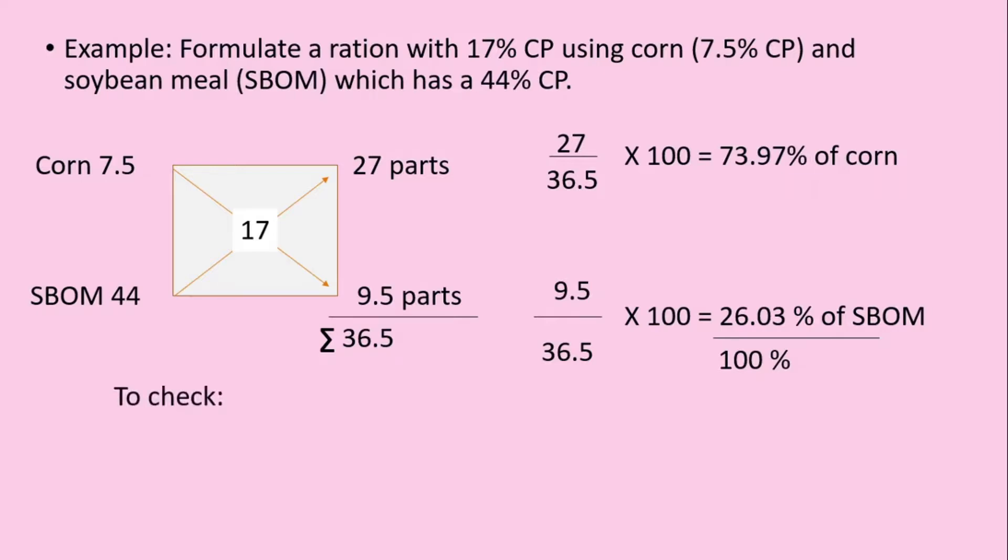Let's check if our calculation is correct. To check, simply multiply 73.97% by the CP content of corn which is 7.5%, and you will get 5.55% CP. Do the same for soybean meal: 26.03 times 44%, you will get 11.45% CP. Get the sum and you will see that you have the correct percentage of CP which is 17%.